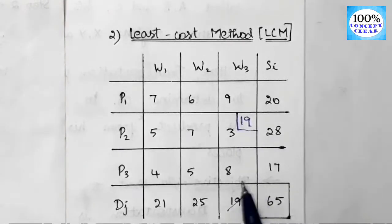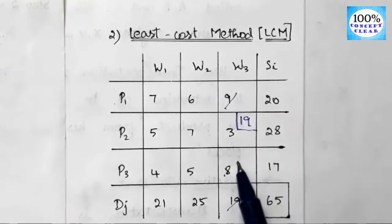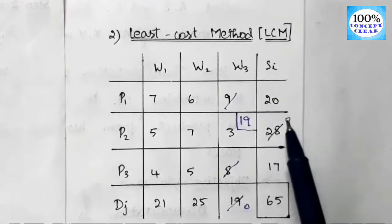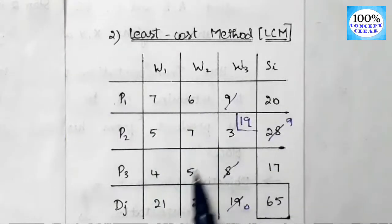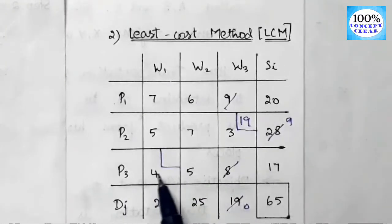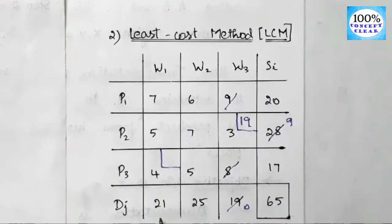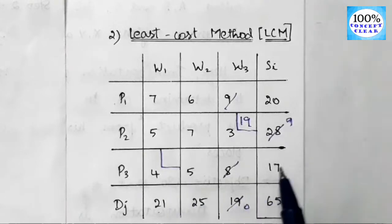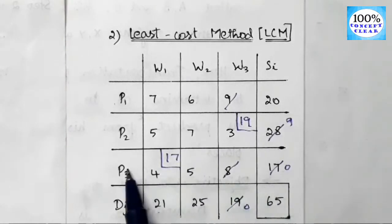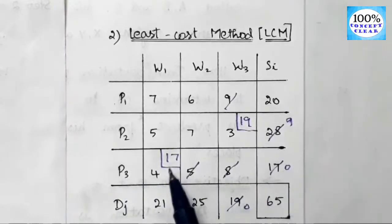For the second allocation, look at the remaining cost elements: 7, 6, 5, 7, 4, 5. The least value is 4, so we locate that cell. Compare demand and supply: supply is 17 and demand is 21. The least value is 17, so we allocate 17. Supply becomes 0 and that row is cancelled. Demand becomes 21 minus 17, which is 4. Second allocation is complete.